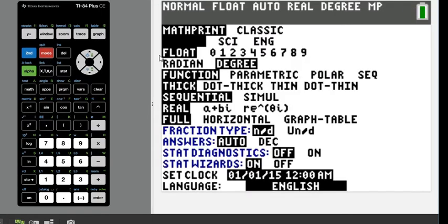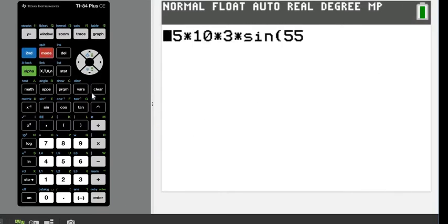Make sure that your mode is set in degrees and not radians. So to get out of here just hit second quit. You can do this with any kind of scientific calculator, just make sure that you are in degree mode whatever kind of calculator you are working with.